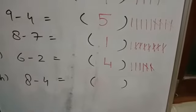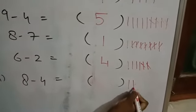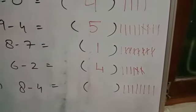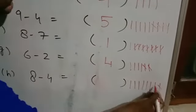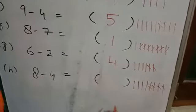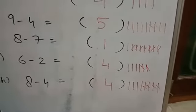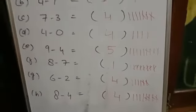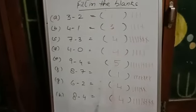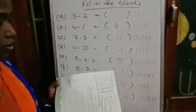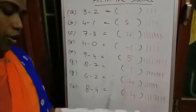Last one: 8 minus 4. Draw 8 lines — 1, 2, 3, 4, 5, 6, 7, 8. How many lines do we have to cut? 4 — 1, 2, 3, 4. How many lines are left? 1, 2, 3, 4. So we are getting 4. Like that, you have to do in your maths book. Do the practice at home in your rough copy.